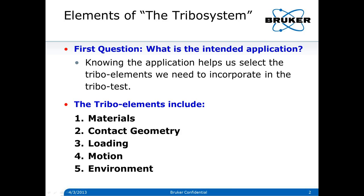So the first thing I'm going to go through is the elements of the tribological system, and there are five of them. But the first question we always have to ask ourselves is: what is the intended application? Knowing the application helps us select the tribal elements we need to incorporate in the tribo test. I've listed five here, and there are many other ways to do this — Horst Chicos had a very nice layout in 1978 in the Tribology series book by Elsevier.